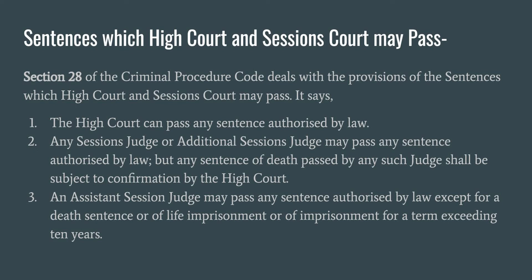Third point: an assistant session judge may pass any sentence authorized by law except a death sentence, or of life imprisonment, or of imprisonment for a term exceeding 10 years. Both the additional session judge and the assistant session judge hold different posts and have different powers. An assistant session judge cannot pass a sentence of death or life imprisonment; it can only pass imprisonment for a term not exceeding 10 years.